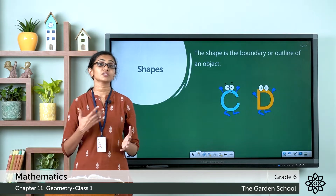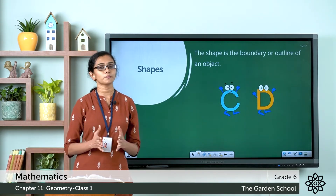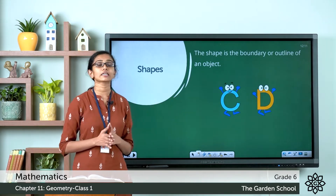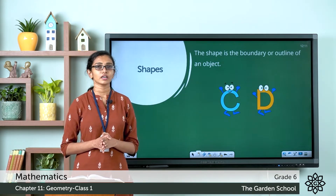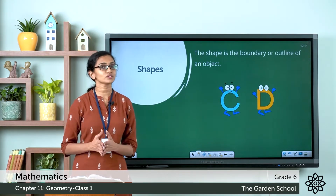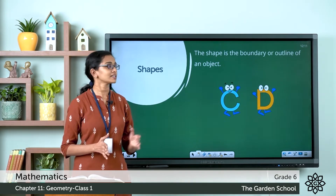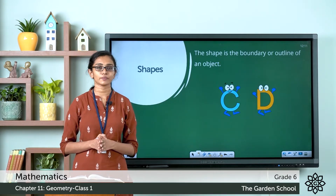There are shapes which are open, like the letter C in the English alphabet, and there are shapes which are closed, like the letter D in the English alphabet.